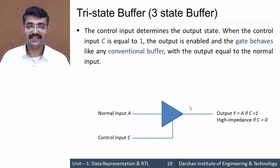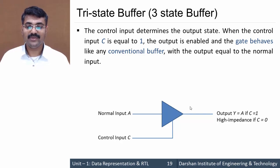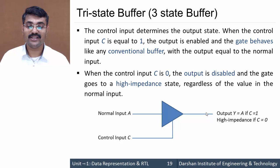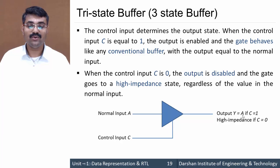The condition is: if C equals one, that means if the control input is one, then the buffer gate will work as a normal buffer gate — whatever input we give, we get the same output. But if C equals zero, the gate is in high impedance state, meaning we won't be getting any logic output — neither zero nor one — at the output during control input C equals zero.